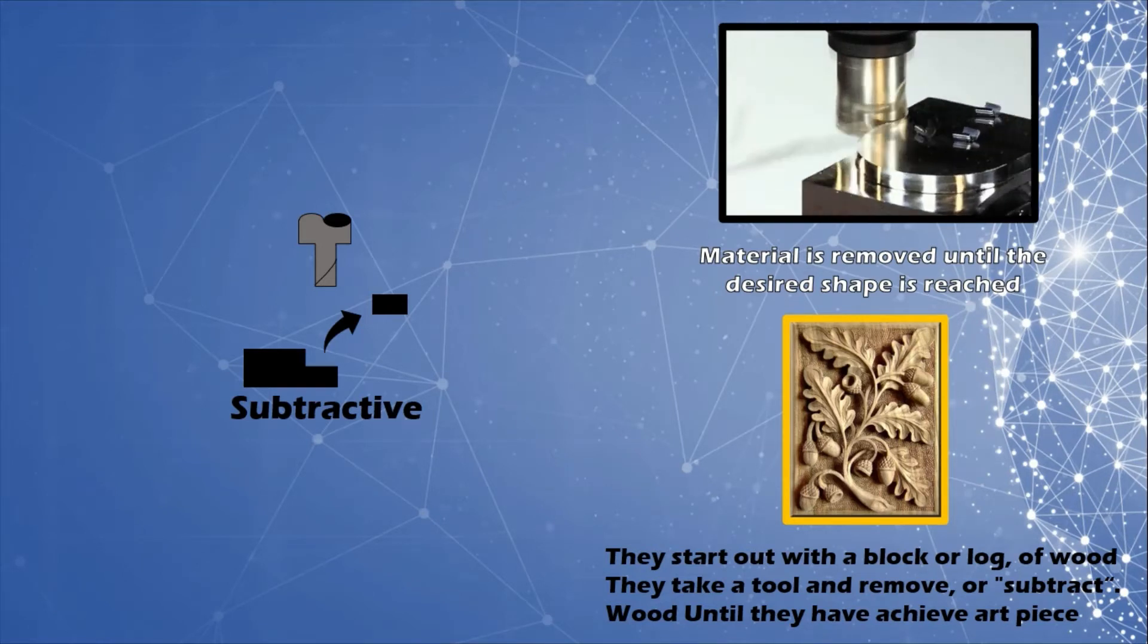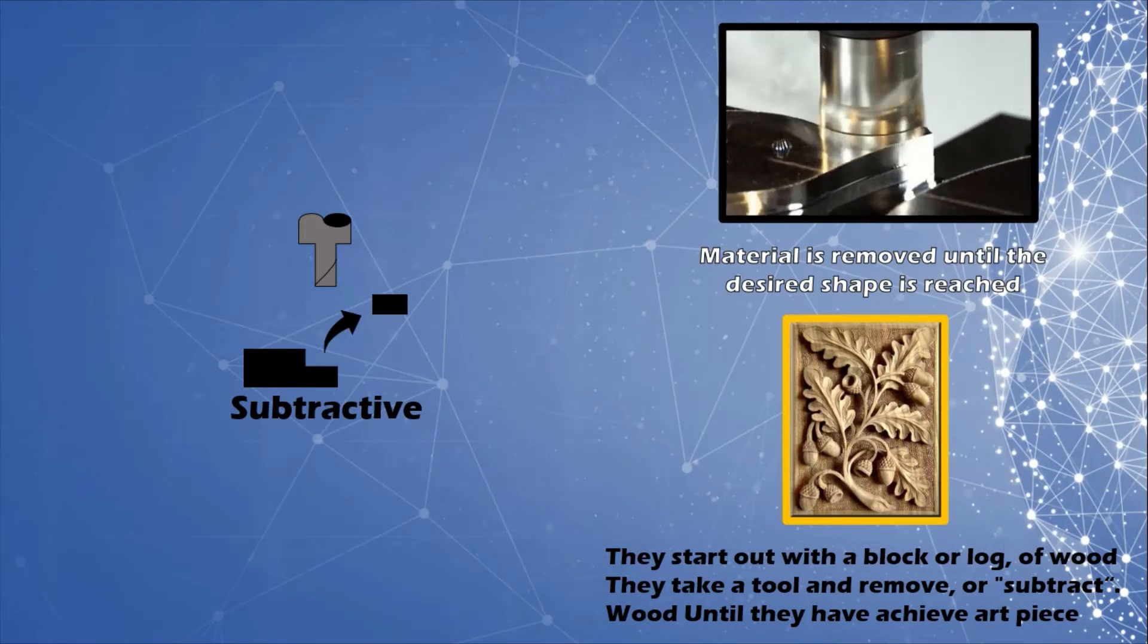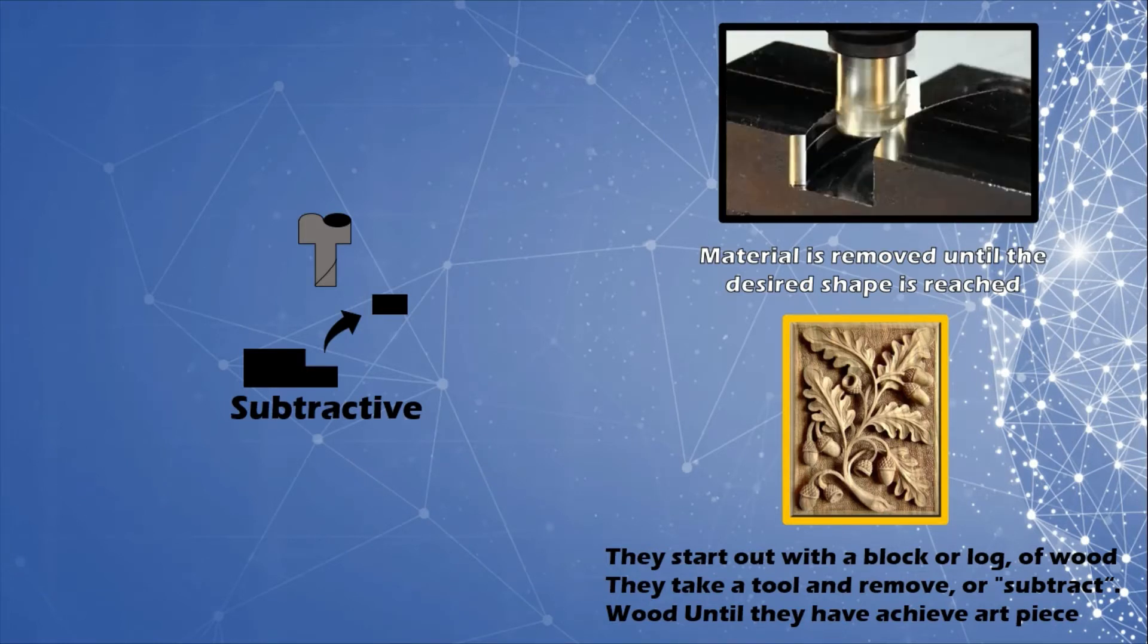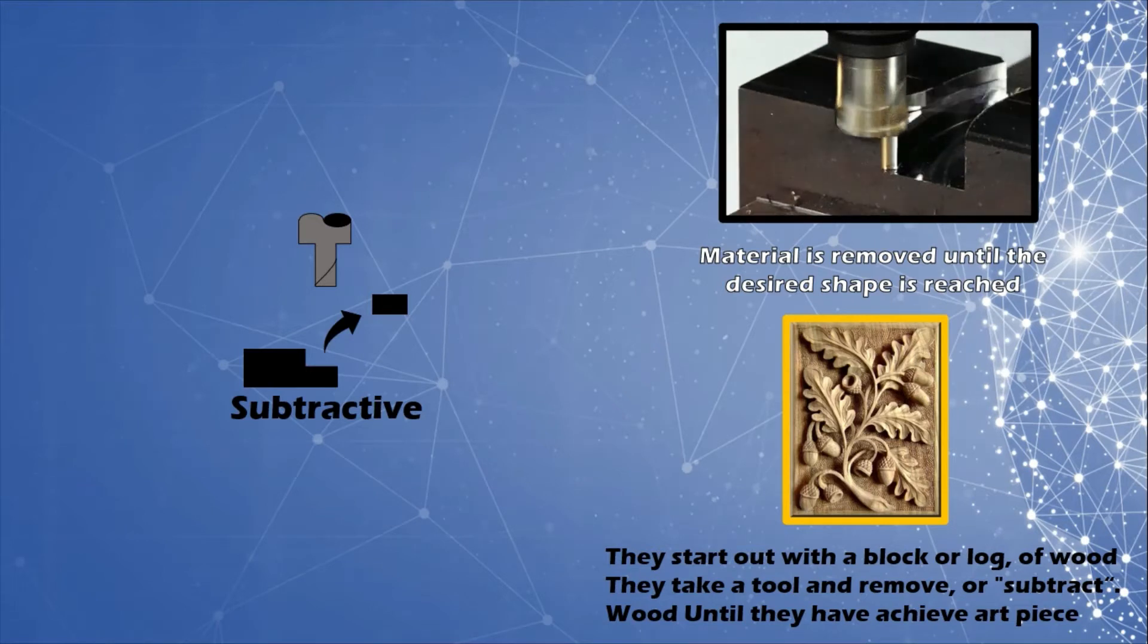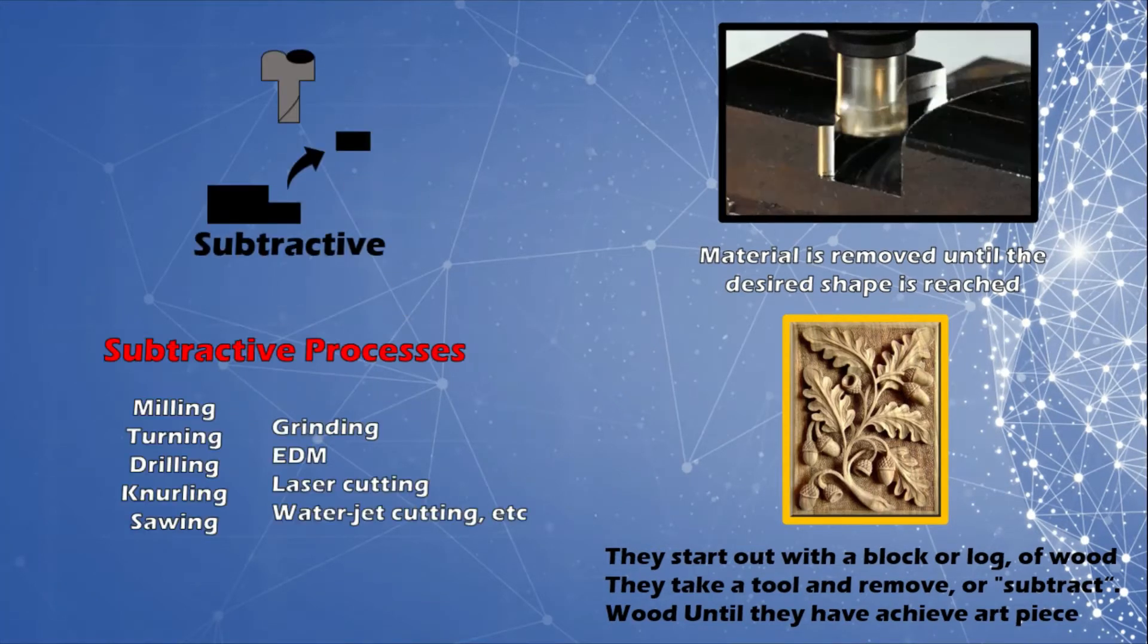Then they take a tool, which is sometimes a chainsaw, and remove wood until they have achieved this final art piece. Subtractive fabrication processes include most forms of machining processes.